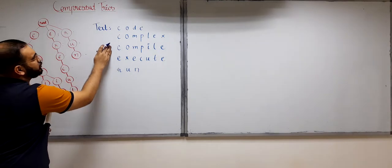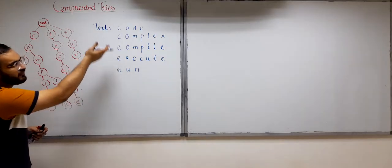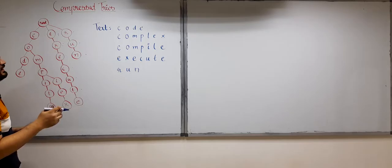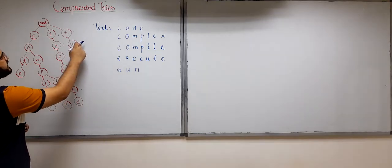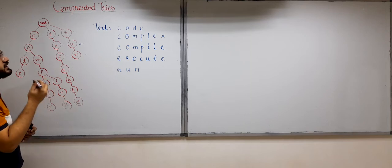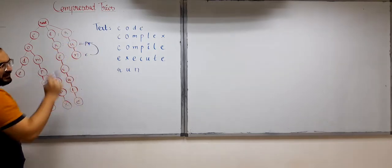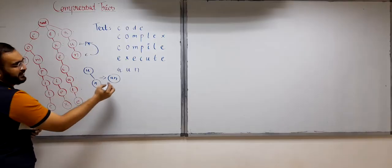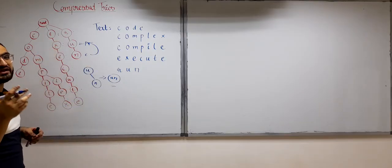This is a standard try made from five input words. To make a compressed try from the same words, wherever the property is violated — a node has just one child — you collapse the child into the parent. You concatenate the child's label onto the parent and make a single node, continuing until you reach a node that has at least two children.